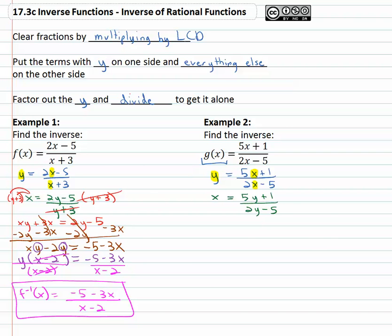Now we're ready to start solving the rational equation for y, and we do that by multiplying both sides by the denominator 2y - 5. The 2y - 5's divide out and when we distribute, we get 2xy - 5x equals 5y + 1.